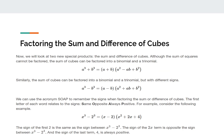The next one is factoring the sum and difference of cubes. Although the sum of squares cannot be factored, the sum of cubes can be factored into a binomial and a trinomial. a cubed plus b cubed is equal to a plus b times a squared minus ab plus b squared. Similarly, the difference of cubes can be factored into a binomial and trinomial but with different signs: a cubed minus b cubed equals a minus b times a squared plus ab plus b squared.